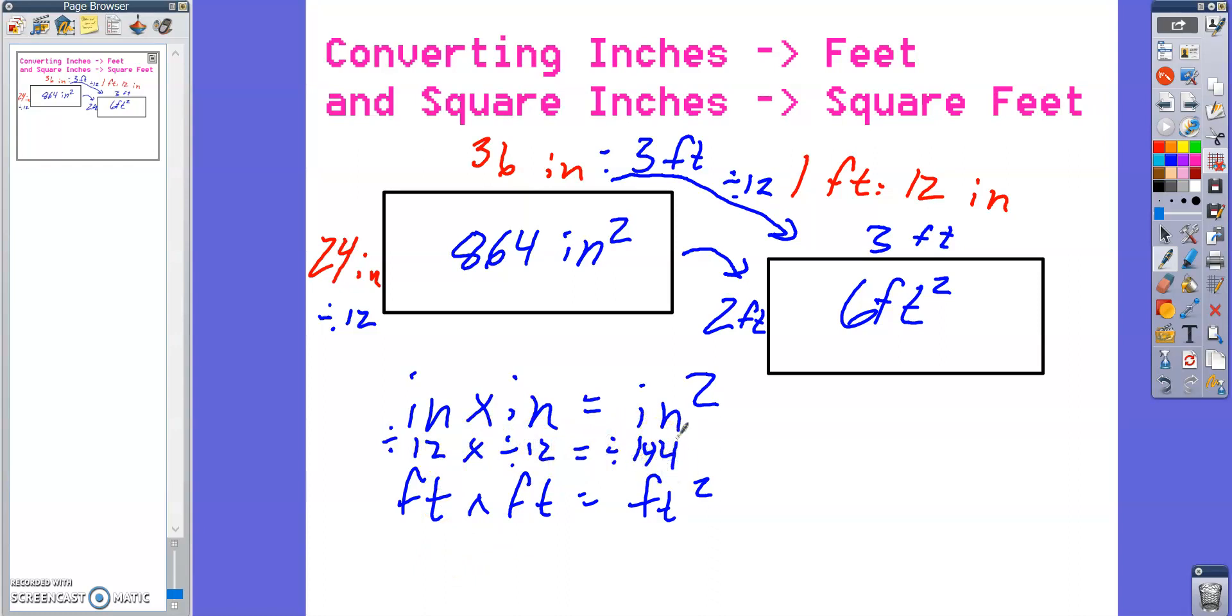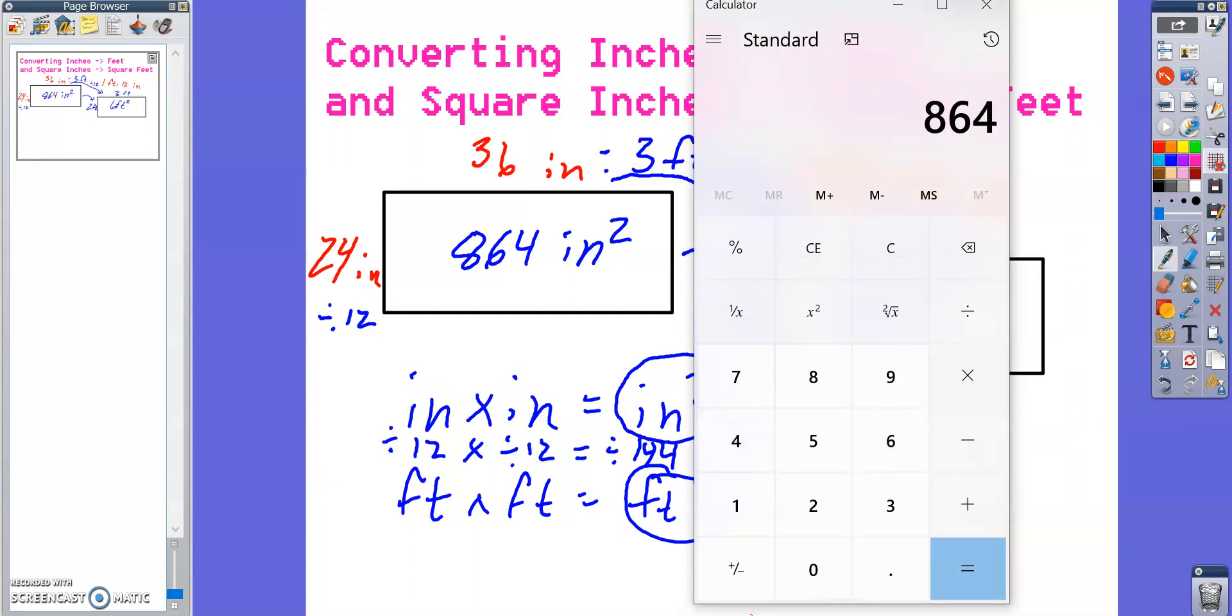Not by 12. Because you're doing these square inches to square feet, that's 12 squared as your divisor. So if I take 864 divided by 144, that gives me 6.